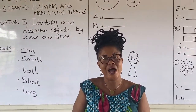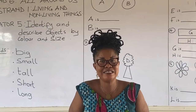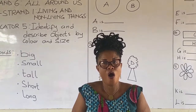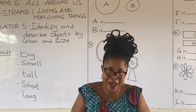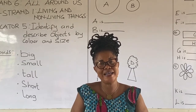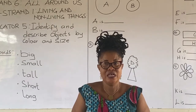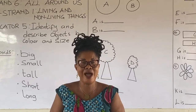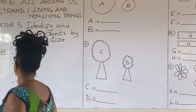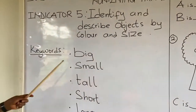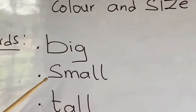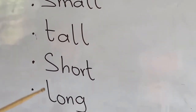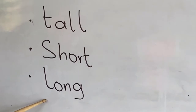We are going to describe objects using their sizes, or length, or height, which falls under measurements. These are the words we are going to use in describing objects. The key words are: big, small, tall, short, long.